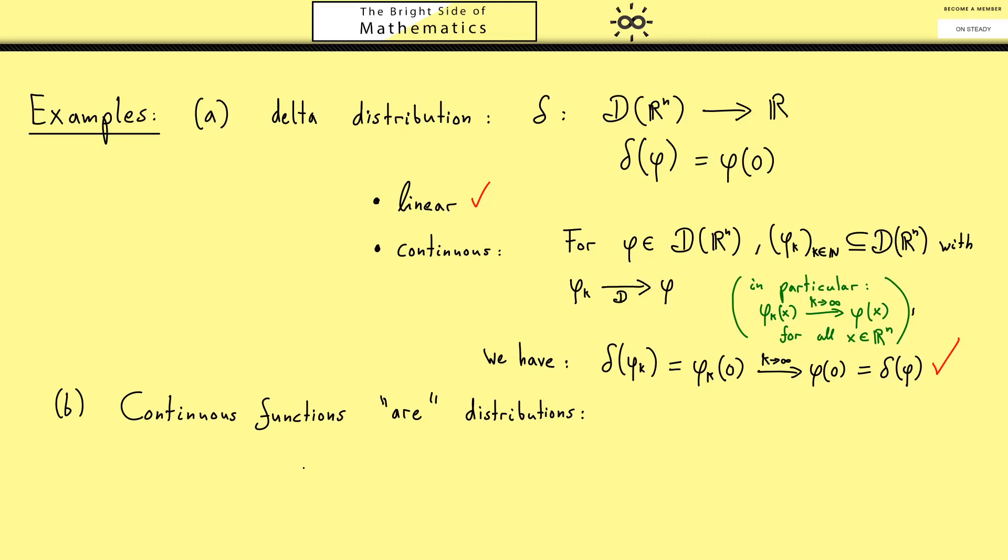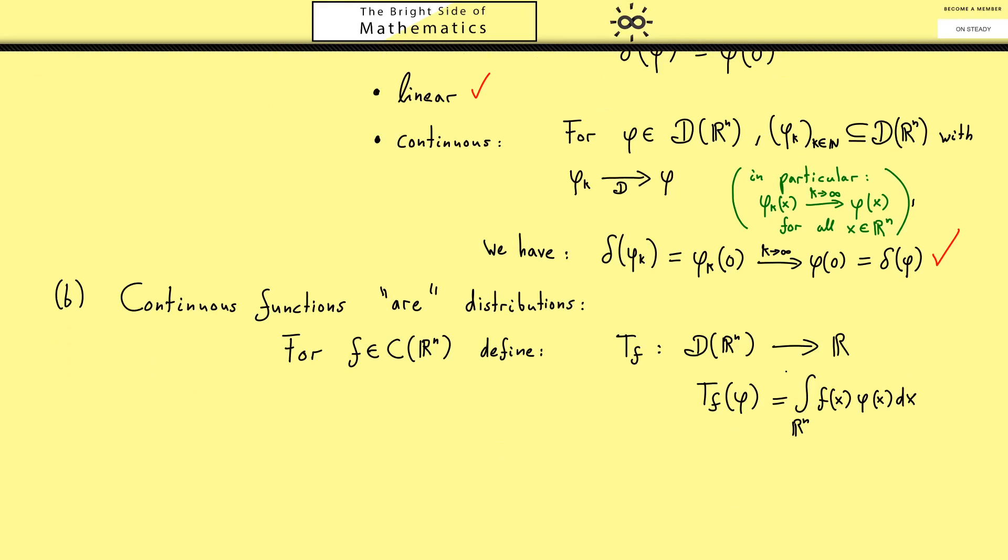What we can immediately state is that continuous functions are in some sense also distributions. In order to explain that, let's choose an arbitrary continuous function f. And for this one, let's define a distribution and call it T_f. So we know the domain would be the test functions and we map into the real numbers. Now putting in the test function in our distribution is defined with the integral over R^n, and here we have f and phi dx. This is something that you also should recognize from the motivation video, but here we now check again our two properties. As before, the linearity is already given. You can see it because the integral is linear, and therefore also this combination gives you a linear map.